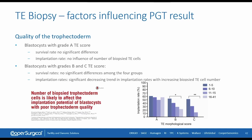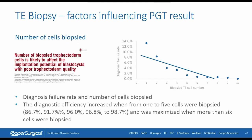For grade B and grade C trophectoderm, however, there was a significant influence linked to the number of cells biopsied. Another study looked at diagnostic failure rate against biopsied cell numbers: when only one cell was biopsied, the failure rate was almost 14%, and the more cells biopsied, the lower the failure rate. If you take more than 5 cells, the failure rate is almost zero. Hence, we advise taking between 5 and 10 cells.